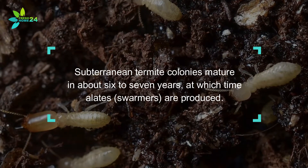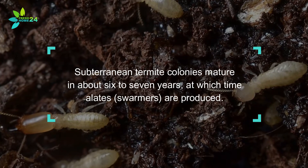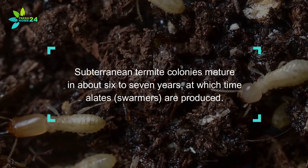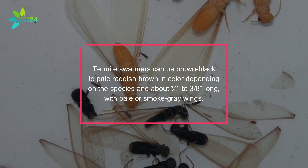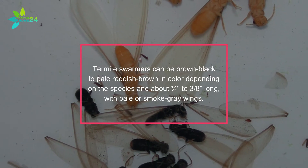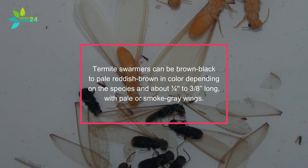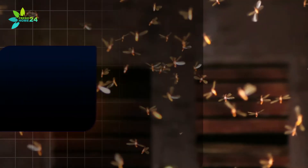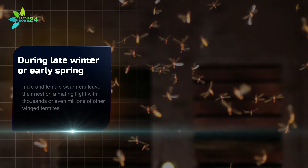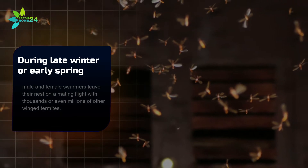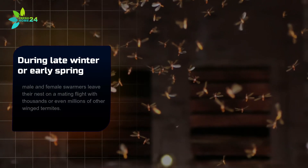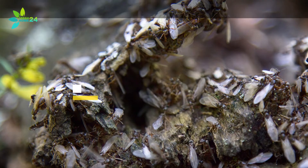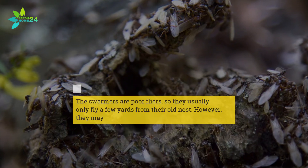How do termites reproduce? Subterranean termite colonies mature in about six to seven years, at which time alates, or swarmers, are produced. Termite swarmers can be brown, black, to pale reddish-brown in color depending on the species, and about one-fourth to three-eighths of an inch long, with pale smoke-gray wings. During late winter or early spring, male and female swarmers leave their nest on a mating flight with thousands or even millions of other winged termites.